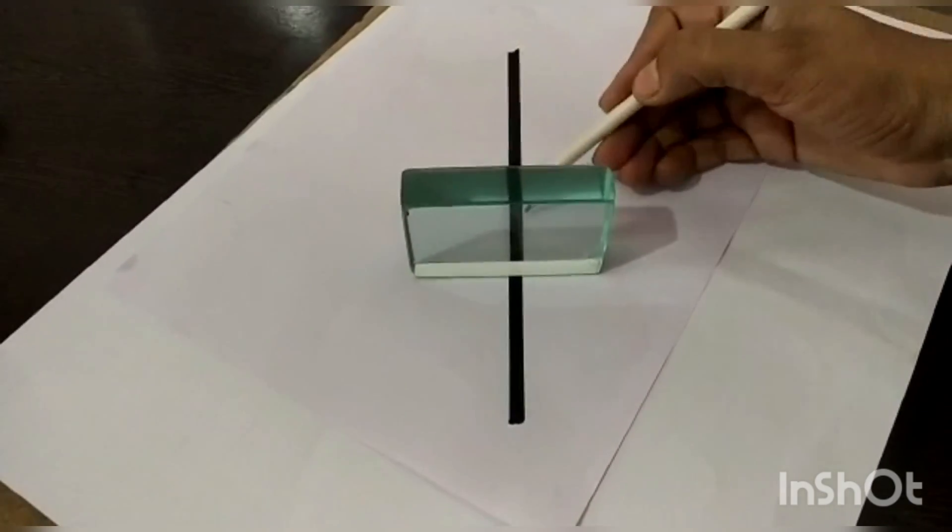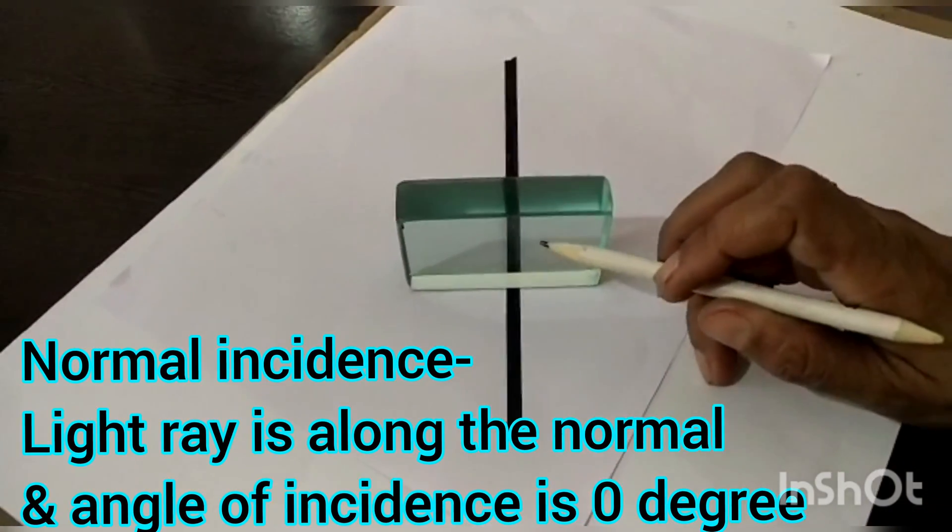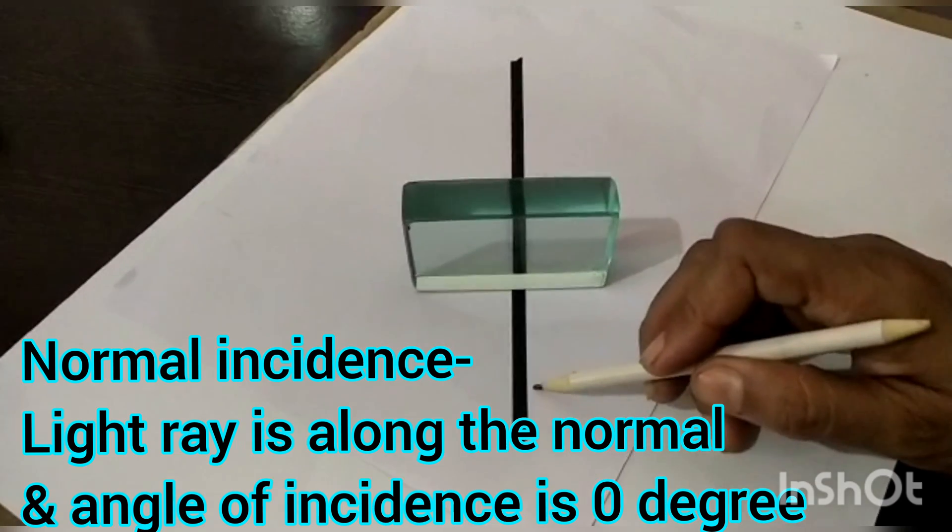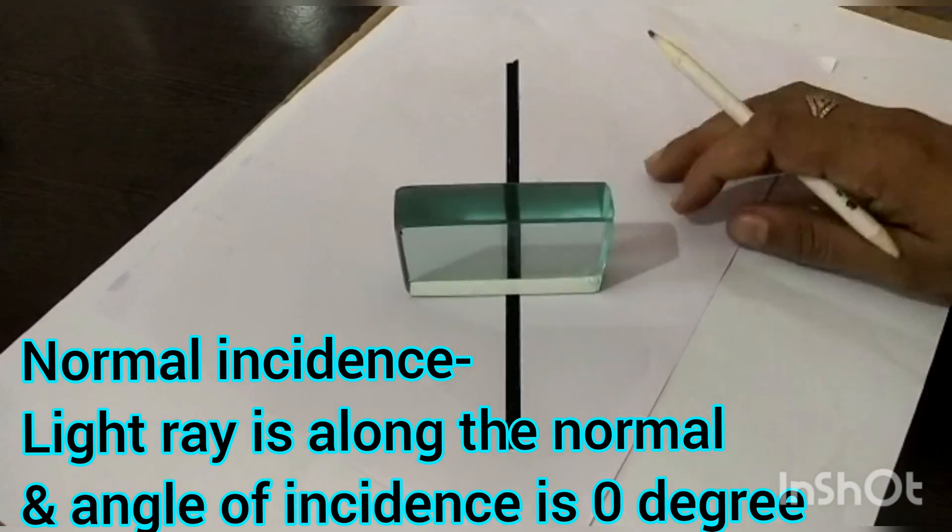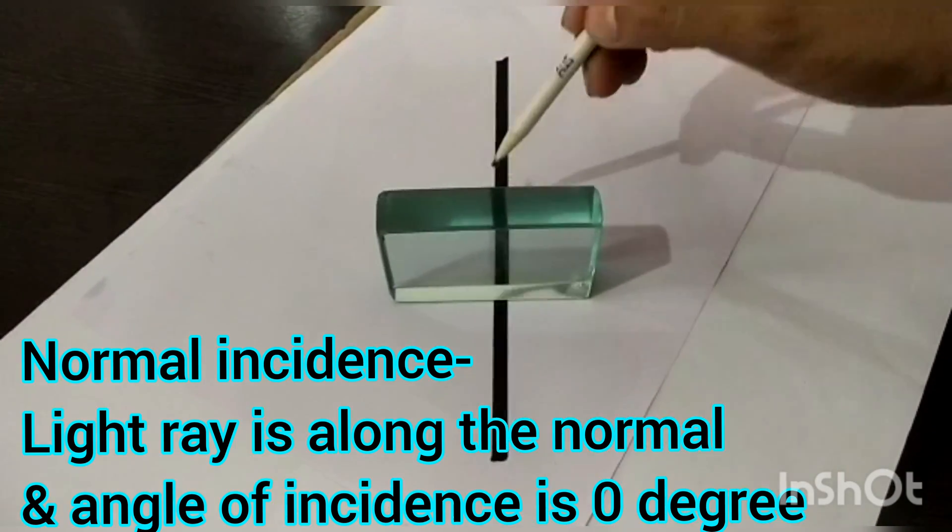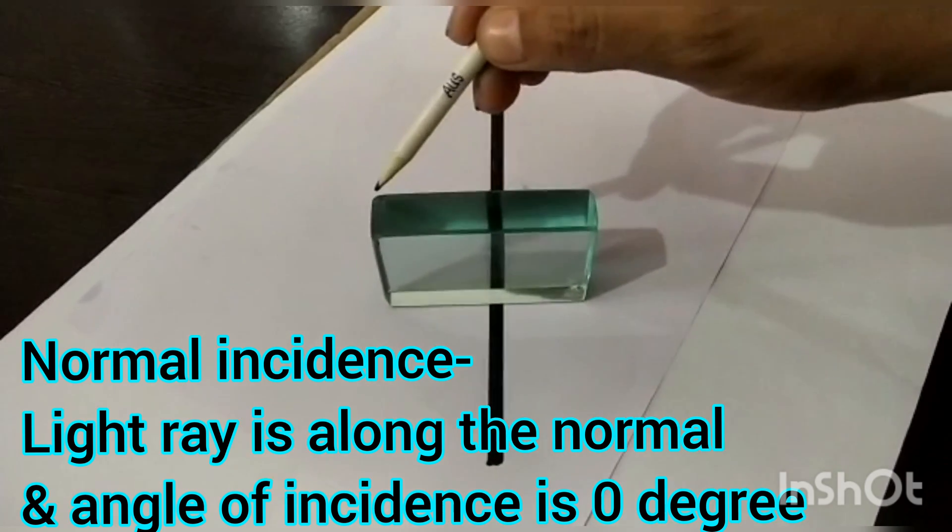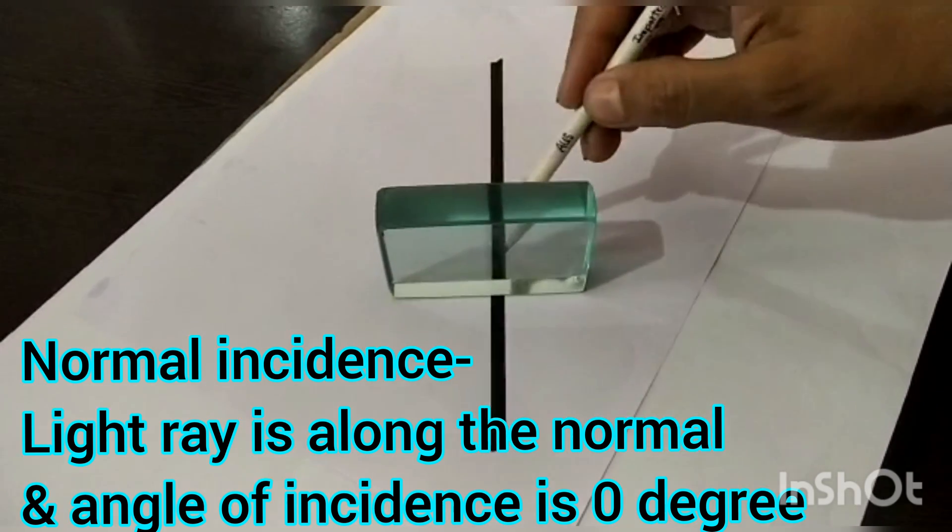Here we can see that this is the incident ray, this is the refracted ray, and this one is the emergent ray. All these three are the same line because this is the condition of normal incidence where this glass surface is making 90 degrees.